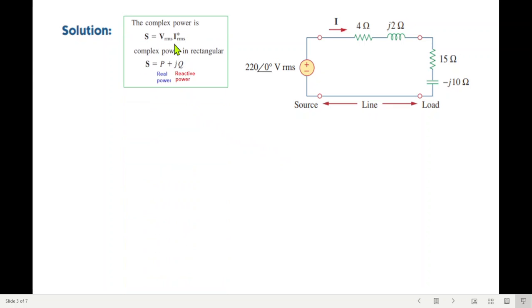In the solution, we have a formula. Complex power is the formula S bar equals VRMS into IRMS conjugate. The formula is S bar equals P plus jQ, where P is the real power and Q is the reactive power. I am going to use this formula to solve the question.